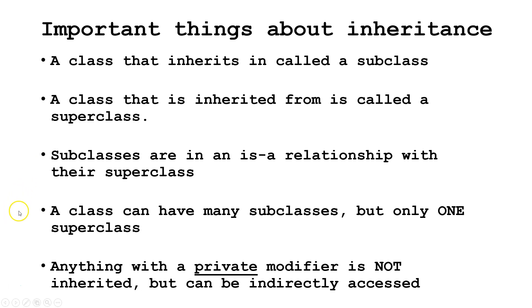Fourth, a class can have many subclasses, but only one superclass. Fifth, anything with a private modifier is not inherited, but can be indirectly accessed.